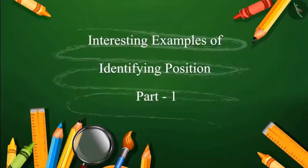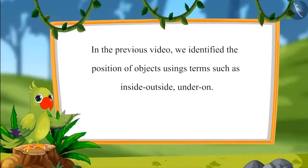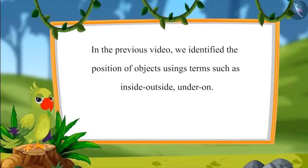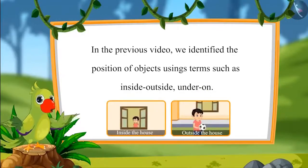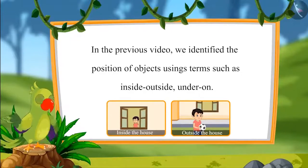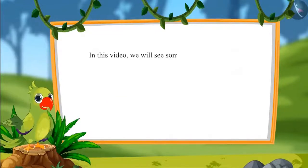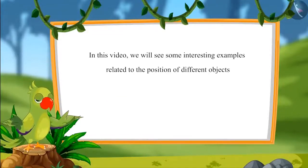Interesting examples of identifying position, part 1. In the previous video, we learned how to identify the position of different objects and know the position of objects using terms such as inside, outside, under, and on. In this video, we will see some interesting examples related to the position of different objects.